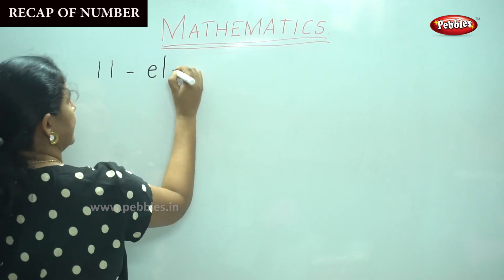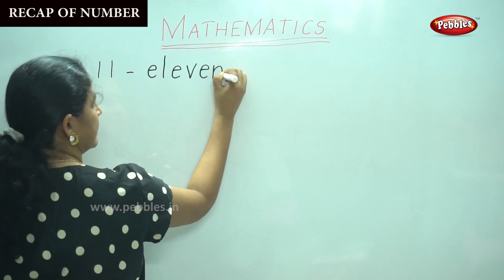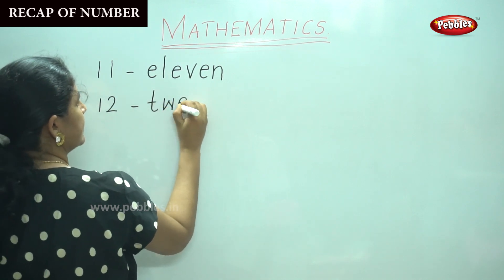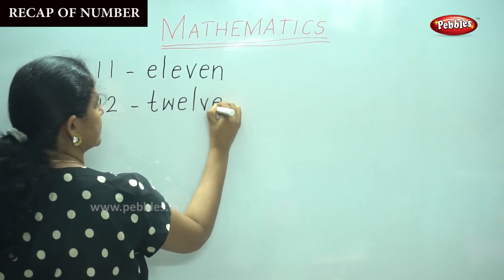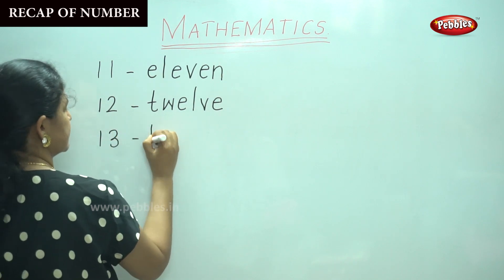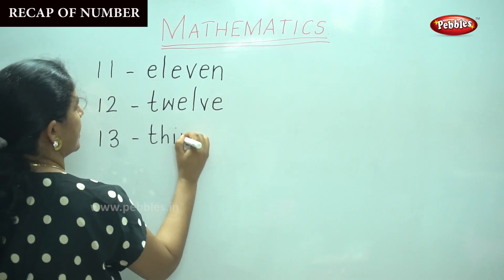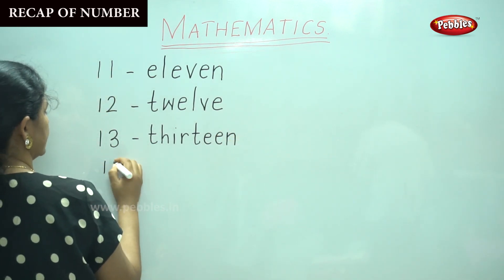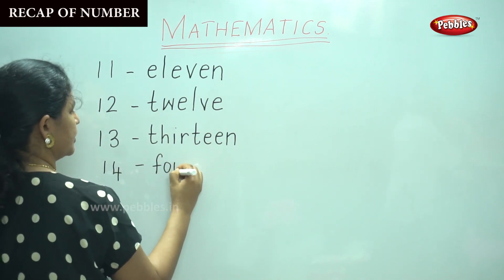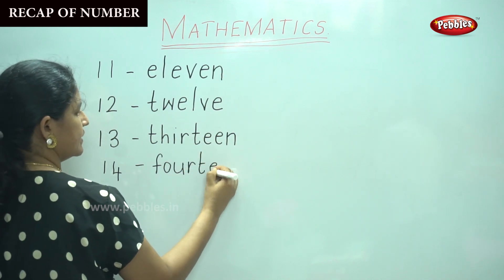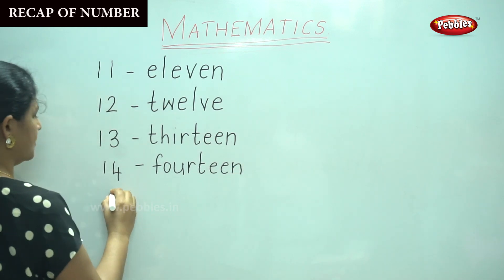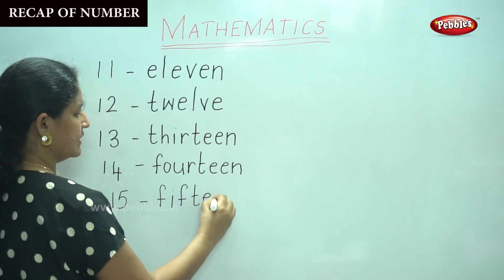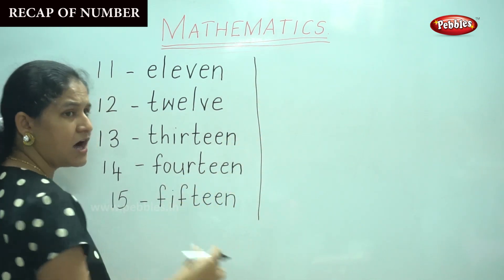E-L-E-V-E-N eleven, 12 T-W-E-L-V-E twelve, 13 T-H-I-R-T-E-E-N thirteen, 14 F-O-U-R-T-E-E-N fourteen, 15 F-I-F-T-E-E-N fifteen. So are you saying it along with me?